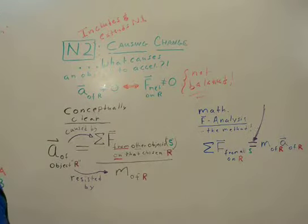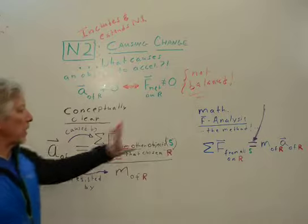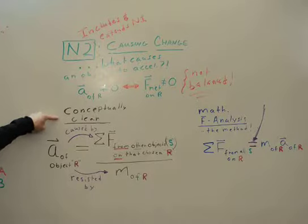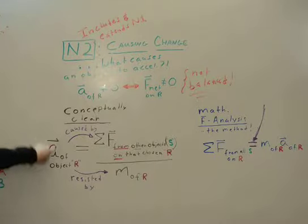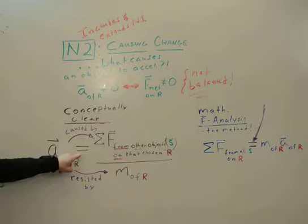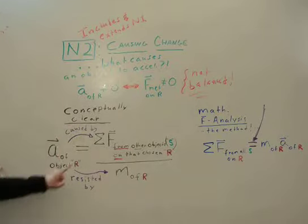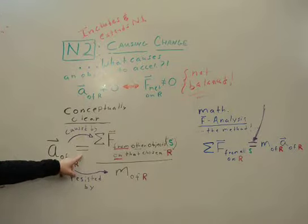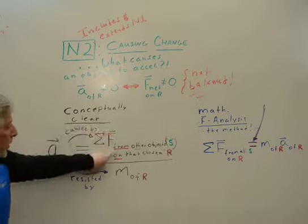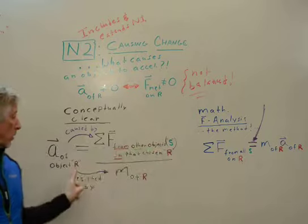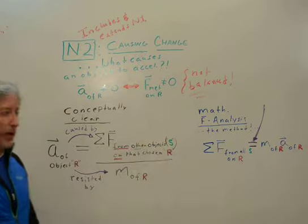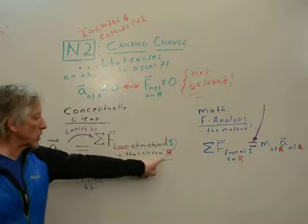So let's put this into a conceptually clear form and then a mathematical analysis form. The conceptually clear form is this: The acceleration of object R is caused by, equal in magnitude and direction, the forces from all other objects that are interacting with R, which I call the sources, as you call them whatever you want, agents, on that chosen object.